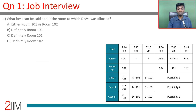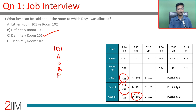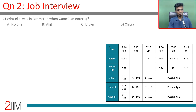Question one: What can best be said about the room to which Divya was allotted? Divya is D, and we've established D is definitely in room 101. There's no ambiguity over her room — she was definitely allotted room number 101. Within 101, the order is A, D, B, F, so even the entry order is clear.